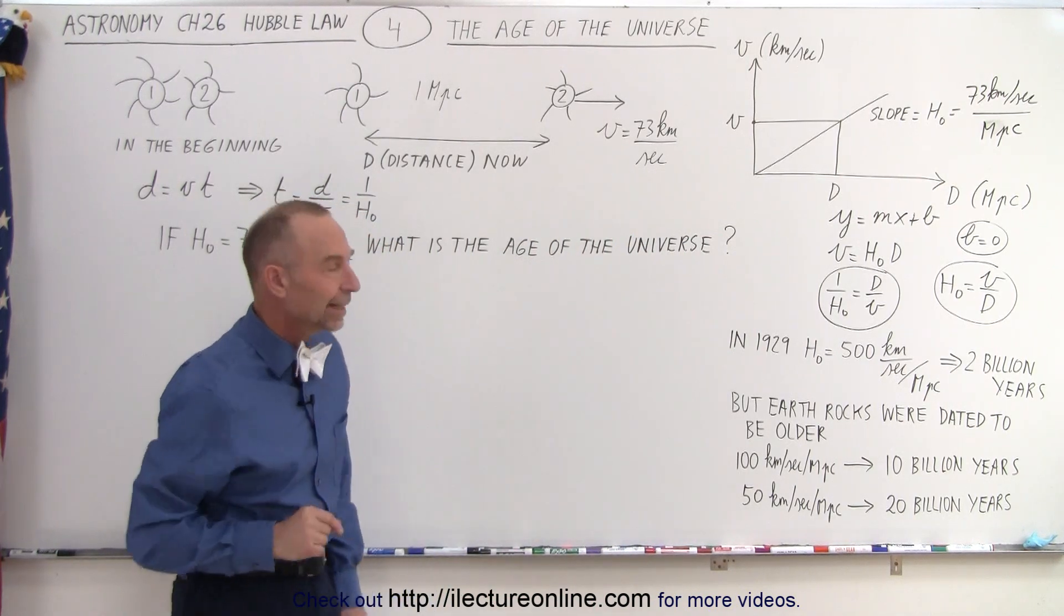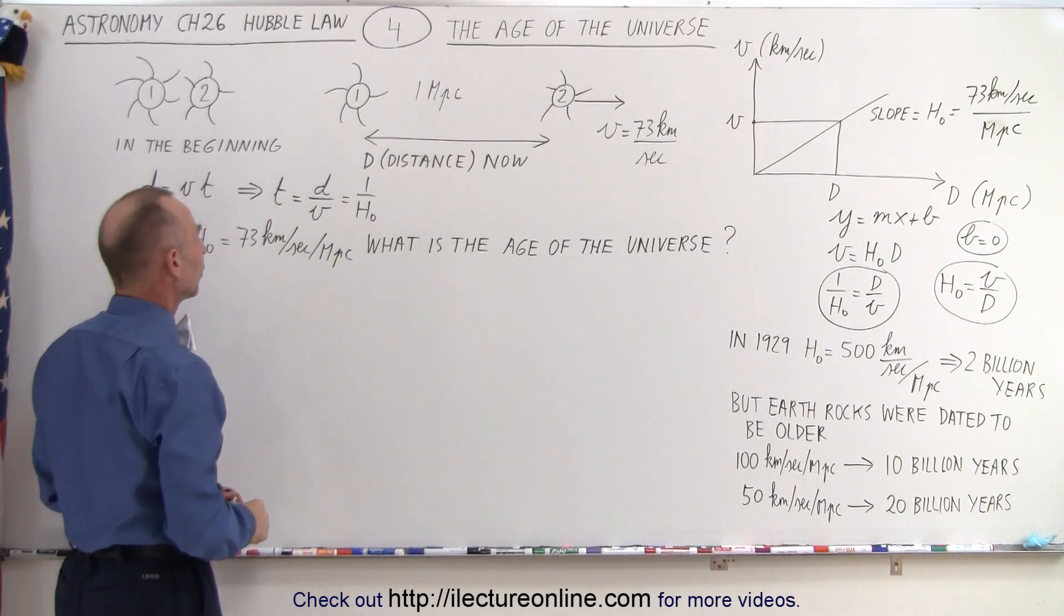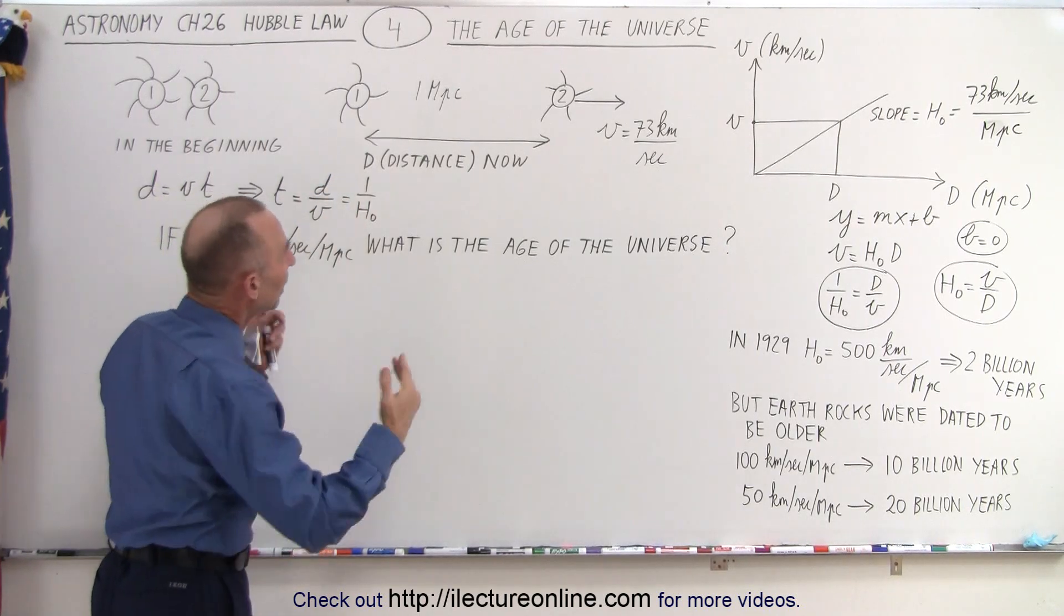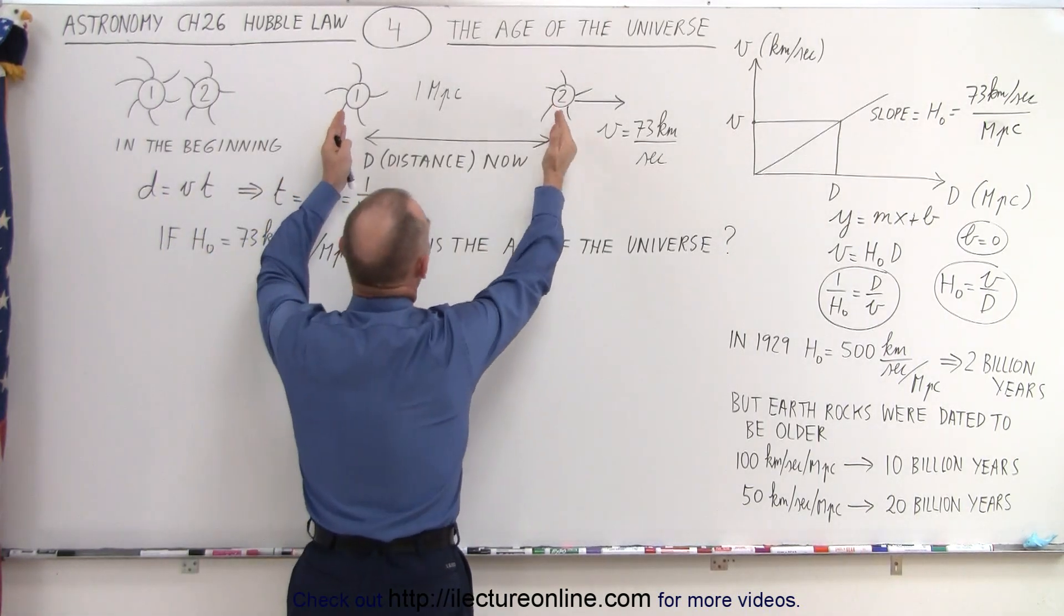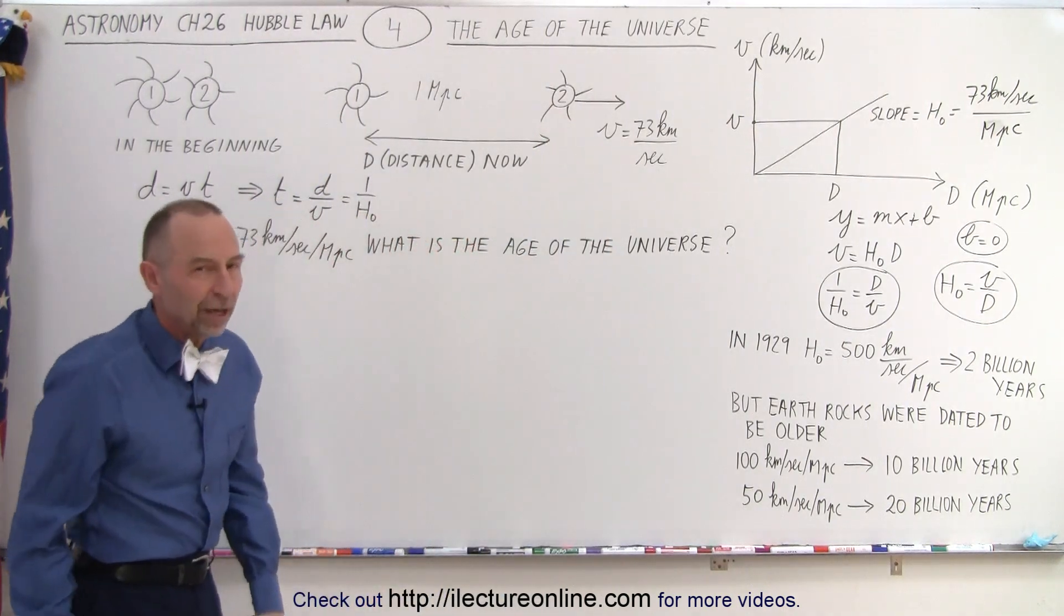So let's go ahead and calculate the age of the universe. Based upon this value, what is the age of the universe? Simply, we need to take the distance divided by the velocity. We're going to take the example 1 megaparsec for the distance with the velocity of 73 km per second.